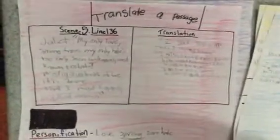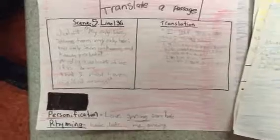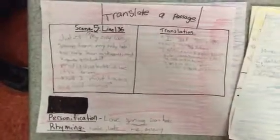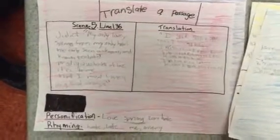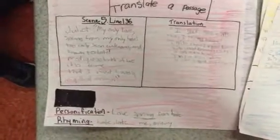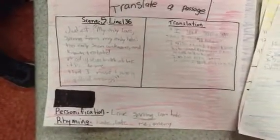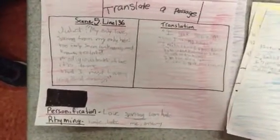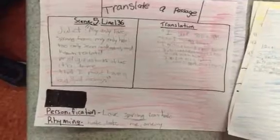Translate a passage. Juliet, my only love, sprung from my only hate. Too early seen unknown and known too late. Prodigious birth of love it is to me, that I must love a loathed enemy.